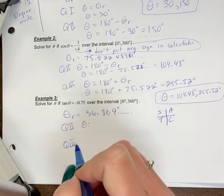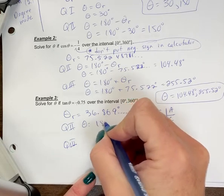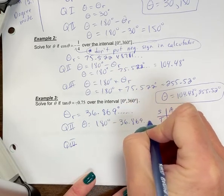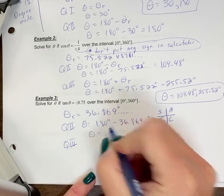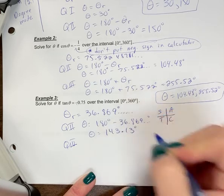Remember, in quadrant two, you can refer to the top of the page for your rules. Theta is equal to 180 degrees minus your reference angle. So you're going to put that in your calculator. And if we go to two decimal places with the correct rounding, it's 143.13 degrees.